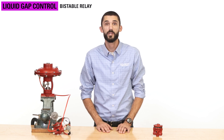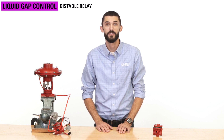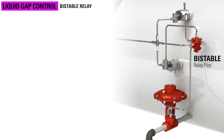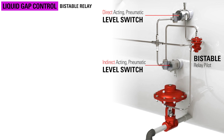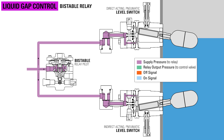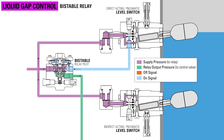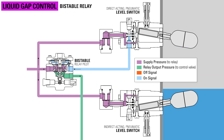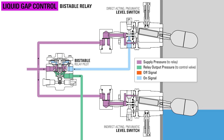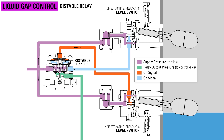You can also use the bistable pneumatic relay to help control a liquid level span. To do this you need a control valve and two level switches, one set to direct acting and one to indirect acting. As the float on the high level direct acting pneumatic liquid level switch moves upward, a pneumatic output to the lower side of the main diaphragm in the bistable relay is created. As the main diaphragm moves upward in the relay, the small ball on the pilot plug is unseated, allowing supply pressure to signal the control valve to open. As the liquid level lowers on the low level indirect acting liquid level switch, the float moves down, allowing the supply pressure to give a pneumatic off signal to the top of the bistable pilot. This overcomes the on signal and causes the control valve to close.